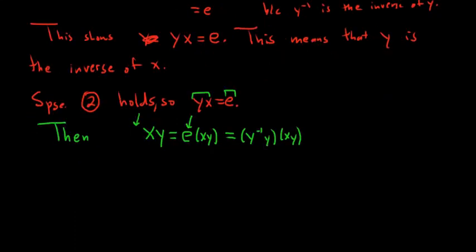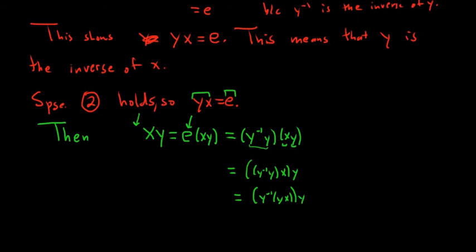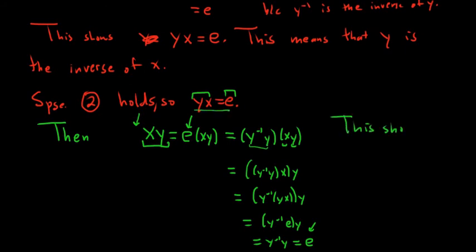Now we use associativity on y⁻¹, y, and x, giving (y⁻¹·y)·x·y. Then use associativity one more time: y⁻¹·(y·x)·y. Since yx = E, this is y⁻¹·E·y. E is the identity, so this is y⁻¹·y. And y⁻¹ times y equals E because y⁻¹ is the inverse of y. Therefore xy = E. We had yx = E, and we showed xy = E, so y is the inverse of x.